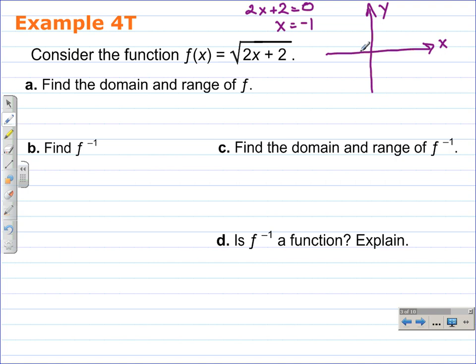So that gives us our intersection on the x-axis, or in this case, the vertex of this half parabola, or this square root function.